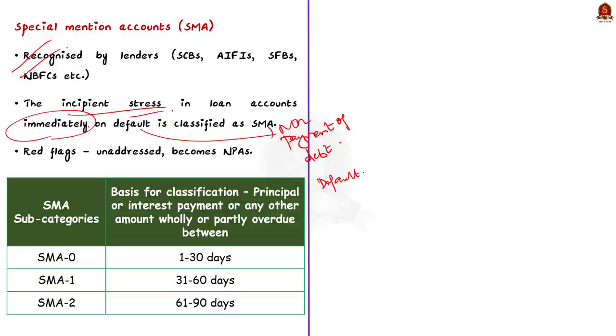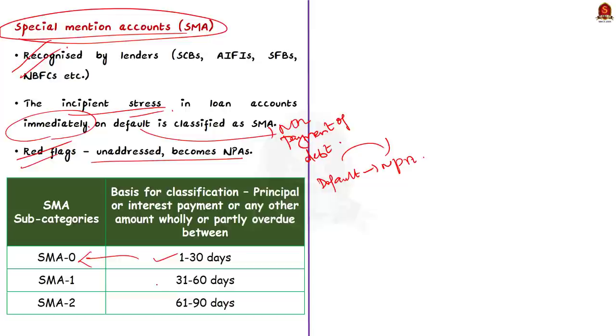Therefore, when there is a default, the lenders are required to classify such assets or loan amounts as special mentioned accounts, that is SMA. So basically, SMAs are red flags and if not addressed, they will become NPA. Now this SMA has three subcategories depending on the overdue period. If it is overdue for 1 to 30 days, it is classified as SMA 0. Then it will be SMA 1 when the overdue period is 31 to 60 days. And when the overdue period is 61 to 90 days, then it will be SMA 2. And after 90 days, the asset is declared as NPA.